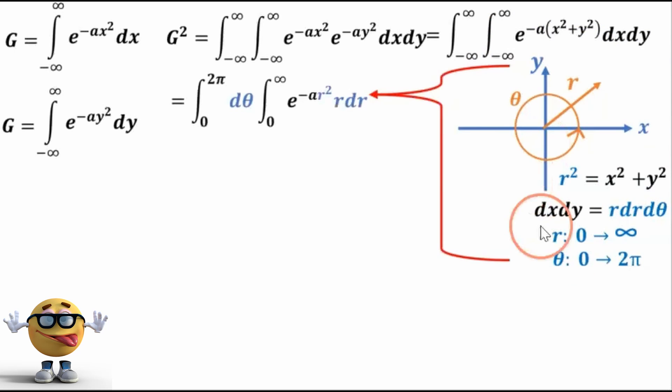Okay, so we'll substitute those new coordinates in. So we no longer have x and y. We have r's and thetas. And we still have a problem with this r squared up here. So we're going to do a u substitution. We're going to set u equal to ar squared.